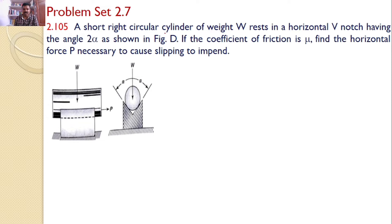A short right circular cylinder of weight W rests in a horizontal V notch having an angle 2α as shown in figure 2D. If the coefficient of friction is μ, find the horizontal force P required to cause slipping to impend.